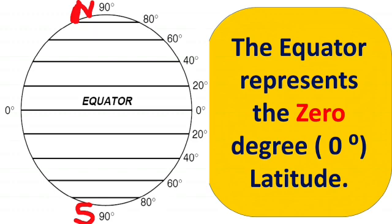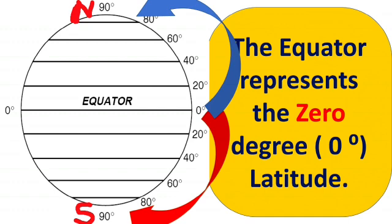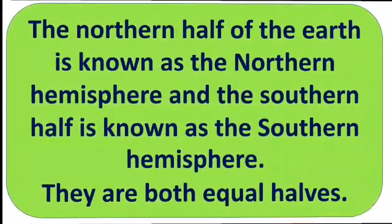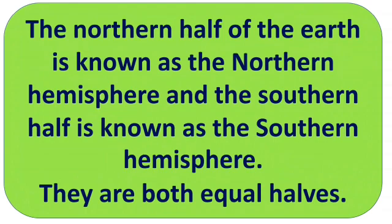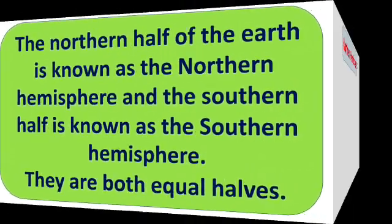As you can see in the picture, the latitudes are numbered. They start from the equator at 0 degrees and go up to the north and south. The north pole is at 90 degrees north and the south pole is at 90 degrees south. The equator divides the earth into two equal halves — the northern hemisphere and the southern hemisphere. The northern half of the earth is known as the northern hemisphere and the southern half is known as the southern hemisphere. Let's have a look at both of these halves in detail.